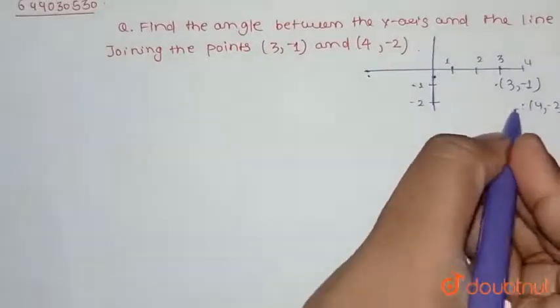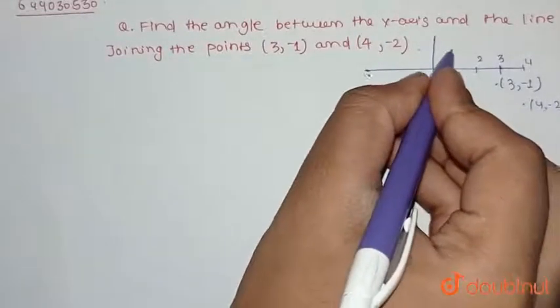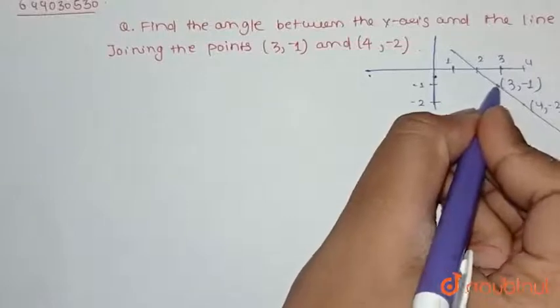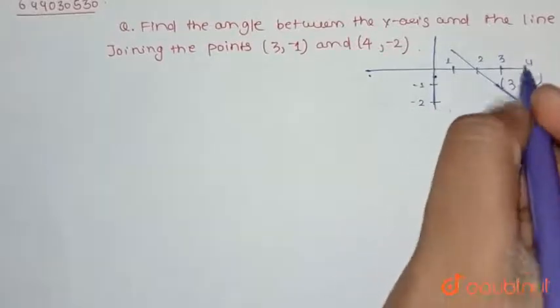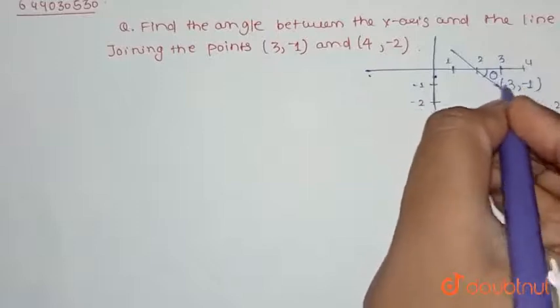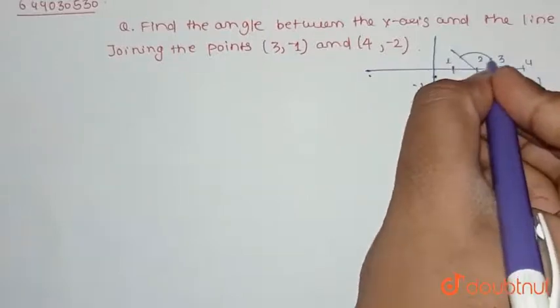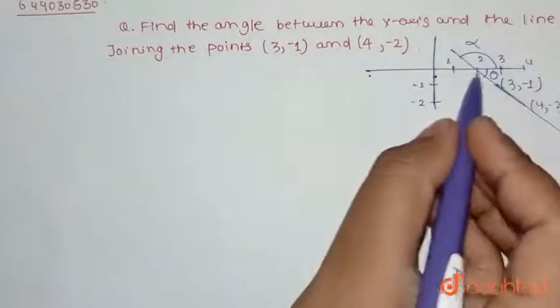So extend the line joining these points. It will cut somewhere at the x-axis, making an angle theta in the lower polar direction and alpha.